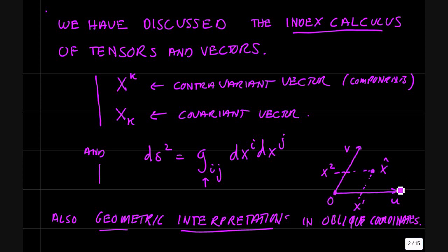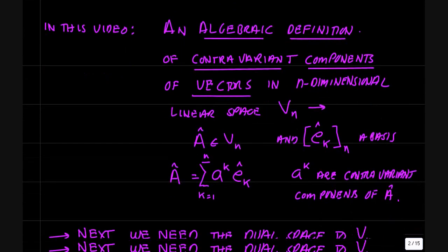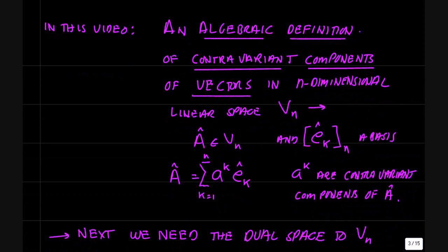So if you have a two-dimensional coordinate system that is not orthogonal, with coordinate axes u and v, a point in the plane can be projected onto the u axis and you get the contravariant component x1 of the vector x and x2. In this video, we're going to introduce a third way to get contravariant and covariant components of vectors in n-dimensional linear space using an algebraic definition.